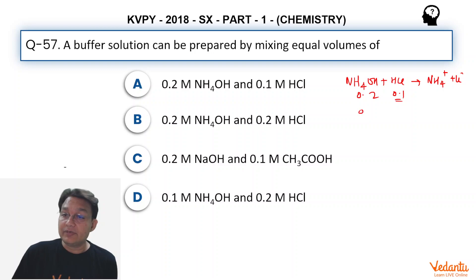This will be 0.1 at equilibrium, this will be approximately 0, and this will be 0.1. This is a buffer solution. A is the correct option.